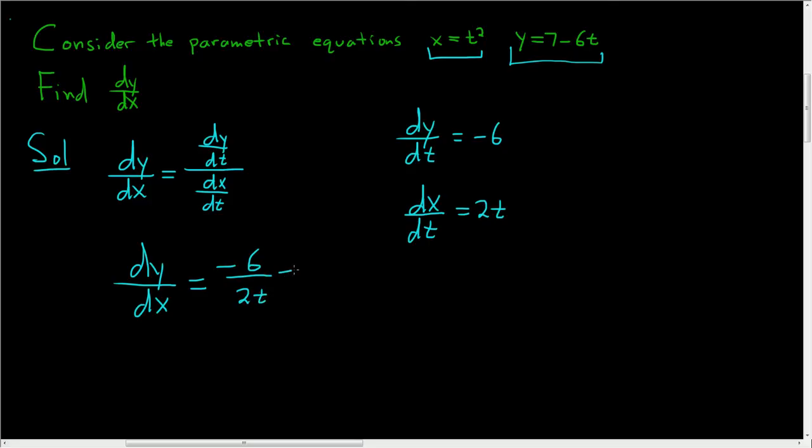And 2 goes into 6 three times, so this is just negative 3 over t. And that's it. That's the answer.